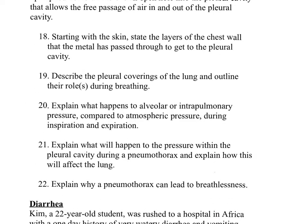Question eighteen: starting with the skin, state the layers of the chest wall the metal has to pass through to get to the pleural cavity. The metal will have to pass through the skin, the fat, the intercostal muscles (both external and internal), and the parietal pleura to enter the pleural cavity.